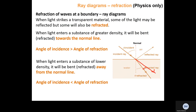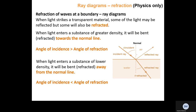The ray has moved towards the normal line. We call it 'normal' because at 90 degrees to the boundary the ray goes through normally without any refraction. So if a ray transmits from a medium of low density like air into a medium of high density like water, the refracted ray refracts towards the normal line. If it goes into something of lower density, the refracted ray will go away from the normal line.